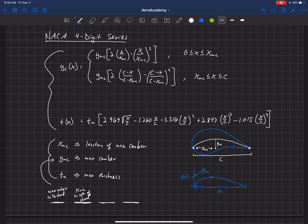And then the final two digits actually are the thickness, so it's the TM in percent chord. Those are the final two digits.